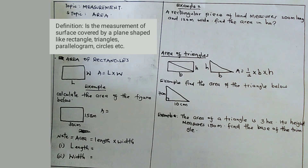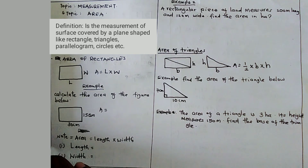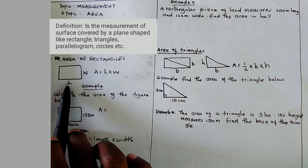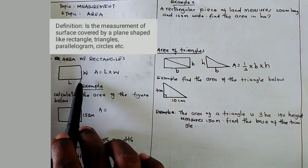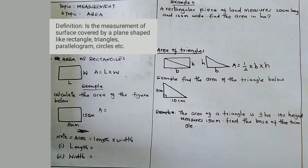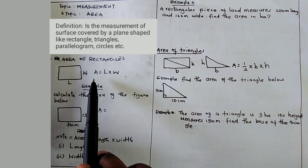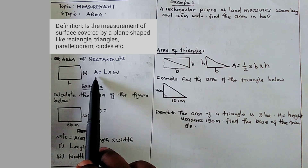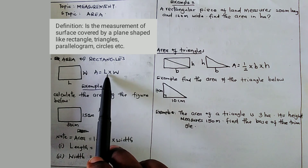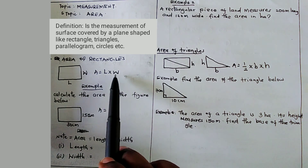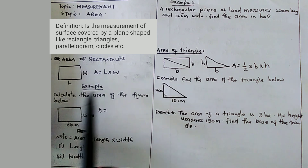We talk about area of rectangles. For a rectangle, the length is the longer side and the width is the shorter side. When you are calculating the area, area is equal to L times W — that means length times width.